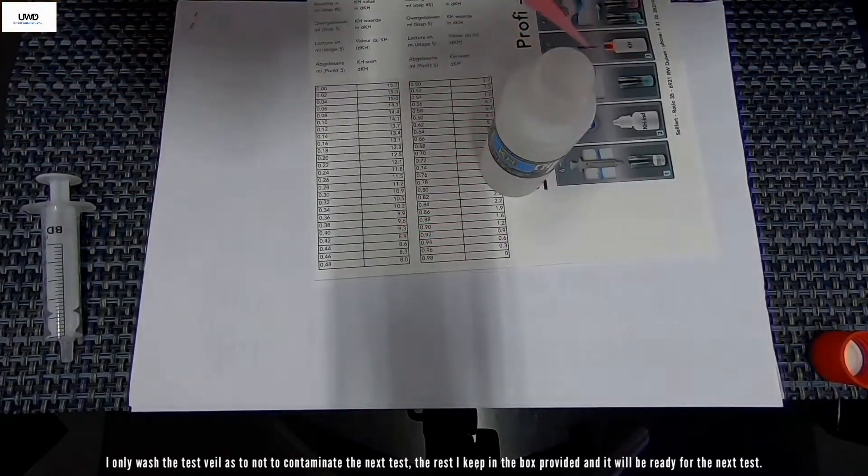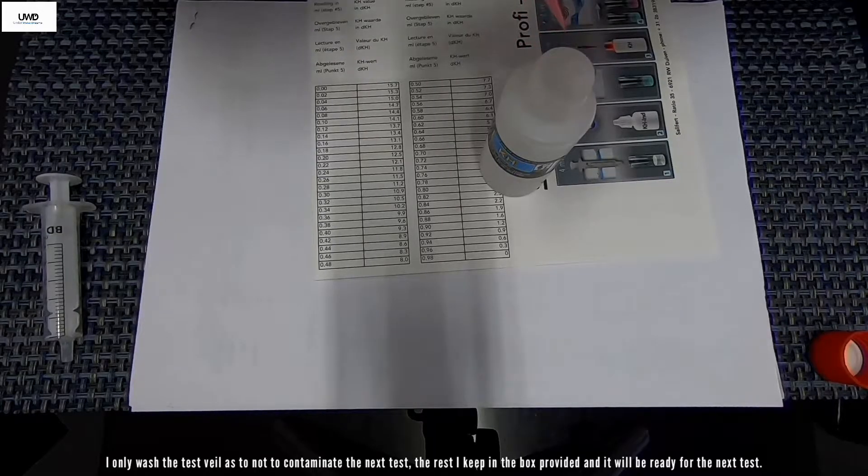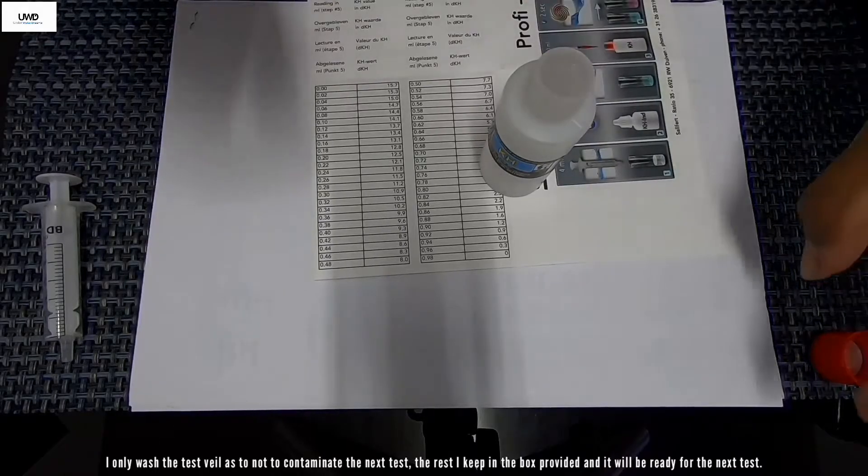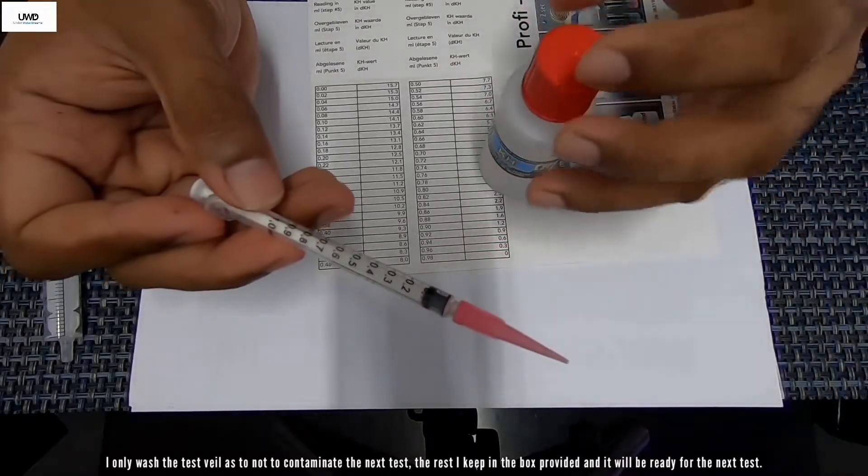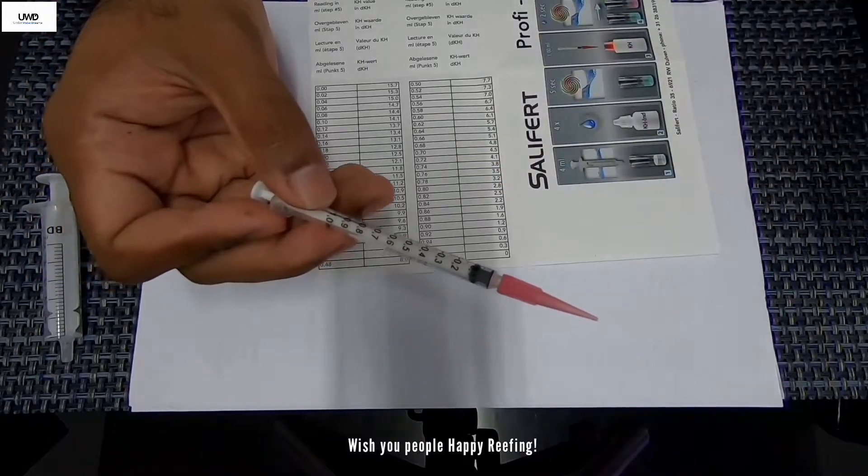That's how you use a Salifert test kit. Basically what you do is the balance here is just going to be putting it back onto this container here so you can use it for your next test. That's it guys, that's how you test dKH with Salifert.